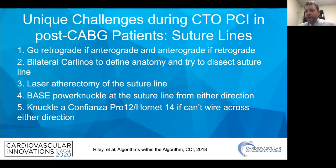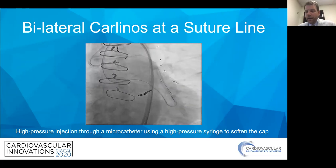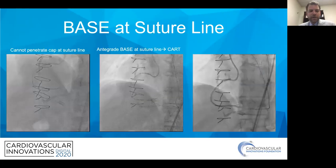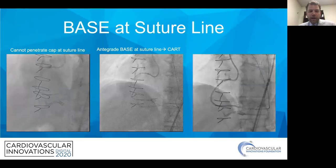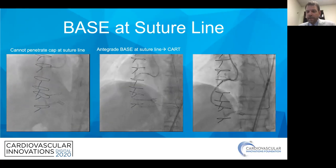Here are some unique challenges with bypass graft suture lines, and ways of dealing with them when you simply can't wire across — as described in that manuscript. This includes bilateral Carlinos, which we had to do in one case because we simply couldn't penetrate the suture line from either direction, and BASE at suture lines. In one case, I kept wiring above and below but couldn't get across, so I did BASE power knuckle to get under the suture line in the subintimal space and then a balloon retrograde to do CART and complete the case.